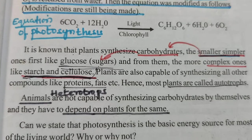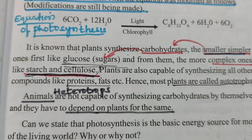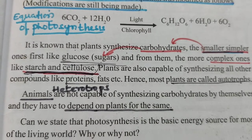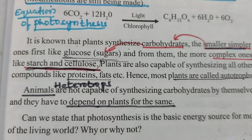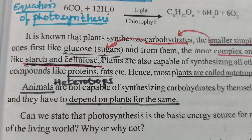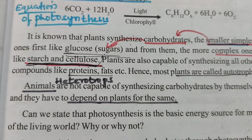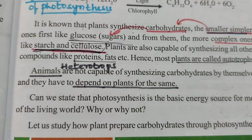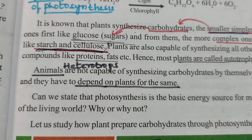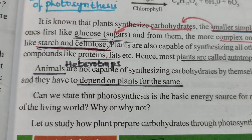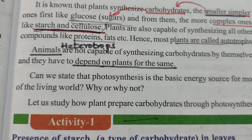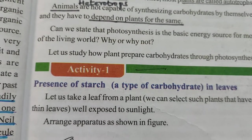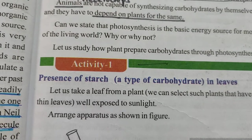Plants are called autotropes. Animals are not capable of synthesizing carbohydrates by themselves and depend on other plants for their food — they are known as heterotropes. Now let us see Activity One: the presence of starch, a type of carbohydrate, in the leaf.